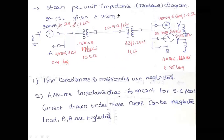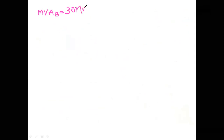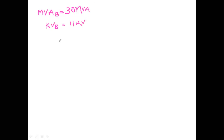So for this problem I have chosen: MVA base = 30 MVA — this is completely my assumption — and KV base = 11 KV. Choosing these base values gives us the least number of conversions. By considering these base values we are going to calculate the new per-unit values.